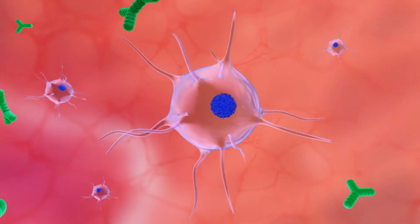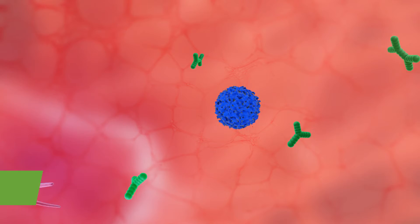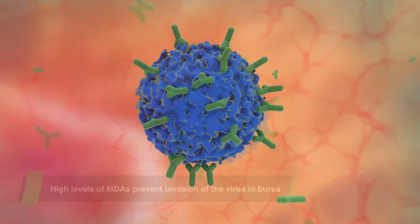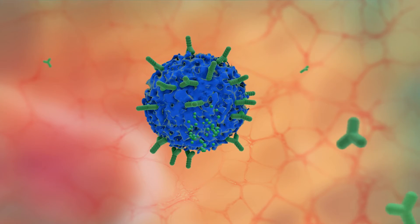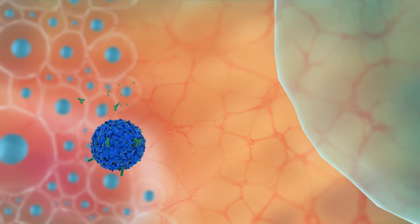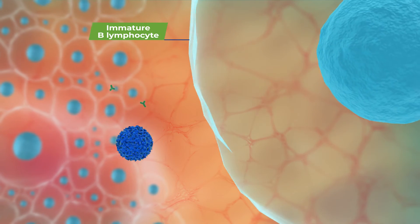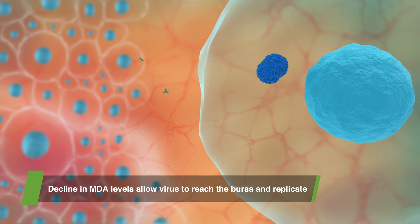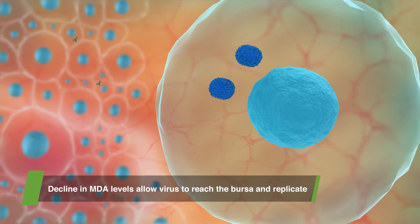Premature invasion of the virus into the bursa is prevented by high systemic levels of MDAs in the bursa. Once the MDA levels decline below the MB1 breakthrough titers, the virus is free to reach the bursa and start replicating.